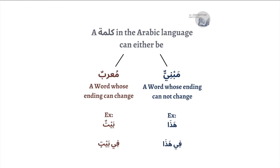In this video we're going to be speaking about A'lamat and A'rab — the signs of I'rab for the sound feminine plural. But before that we need to speak about the difference between the Mu'rab and the Mabni, the different signs of I'rab, and so on, so a few things we need to cover first to build up to the actual point of this video.